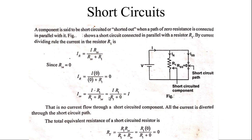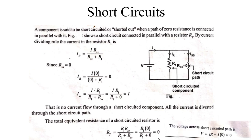So the total current I flows through the short circuit path (Isc = I). The derivation: Isc = I × R1 / (R1 + Rsc). Since Rsc = 0, R1 cancels and Isc = I. There will not be any flow of current through the short circuited component — all the current flows through the short circuit path. The total resistance of the short circuit path is zero, and therefore the voltage across the short circuit path is also zero.